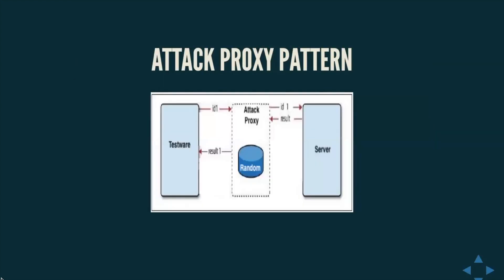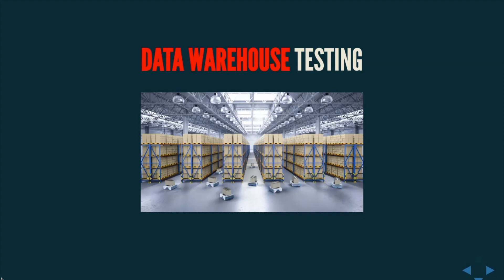Let's look at a more advanced design pattern called the attack proxy pattern. Our testware makes a request to a file server requesting an object with ID 1, performs this request, returns the result, and in the next steps creates randomized data used in the attack proxy to create multiple requests — sometimes called fuzz testing — which attack the server. We then check for different error codes or how the server actually behaves. This is very useful in practice because with very little effort we can create a lot of tests.